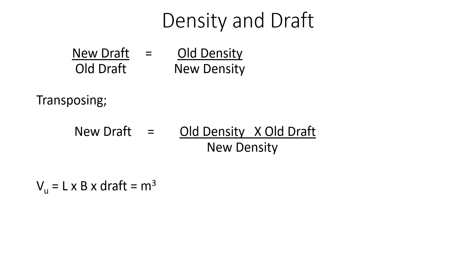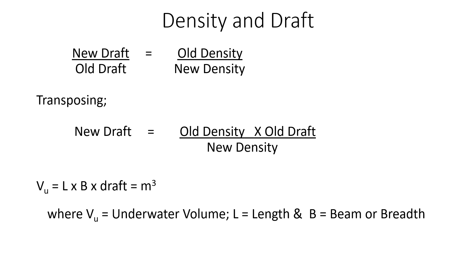We are also going to look at underwater volume for box-shaped vessels and barges, where the underwater volume V_u equals length times beam (or breadth) times draft. We will then look at displacement for these vessels, where displacement equals the underwater volume V_u times the density of the water the vessel is in — in other words, length times beam times draft times density.